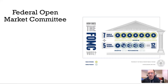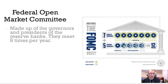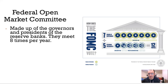So the Federal Open Market Committee — what is it? It's made up of the governors, so we had a Board of seven governors, and then it's made up of five of the reserve bank presidents, and so they kind of rotate.